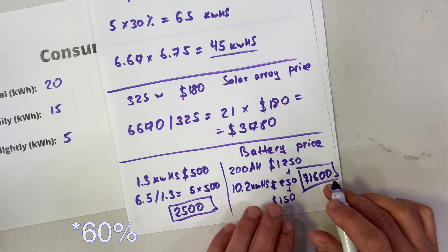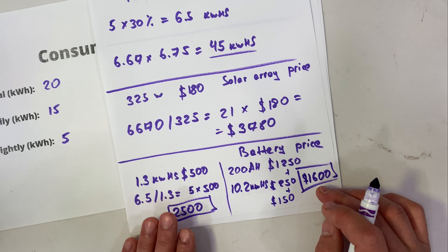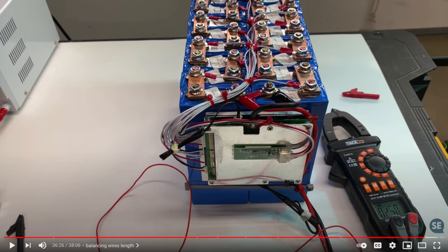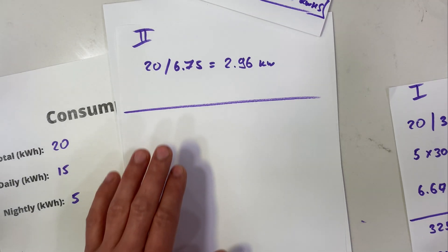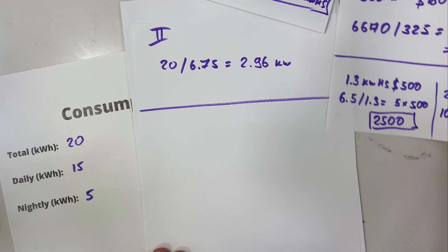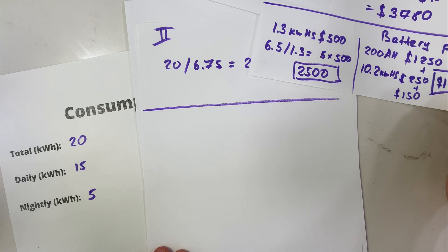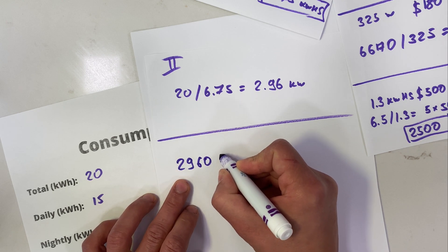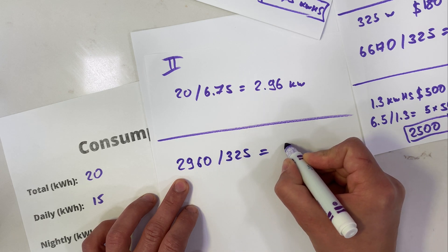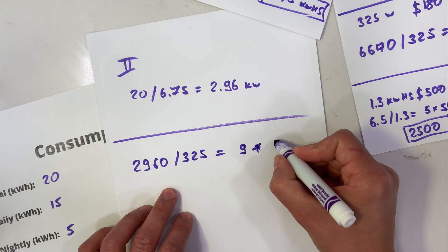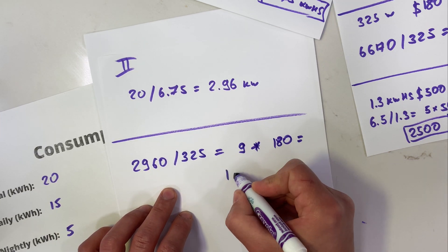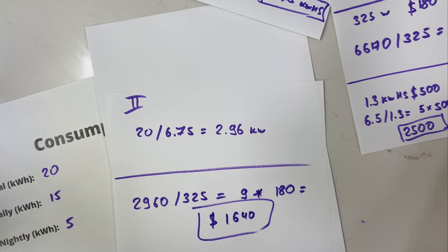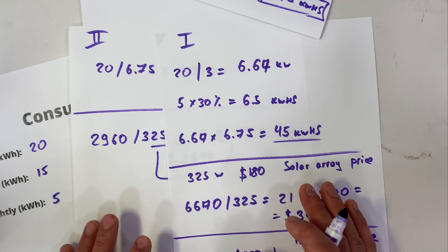For $1,600 you get almost twice the capacity of the ready-made option, and building a lithium iron phosphate battery is not that complicated. For example two, battery pricing is the same ($2,500 or $1,600), but the solar panel cost is less. We need 2960 watts, so 2960 divided by 325 is about 9 panels. Nine panels at $180 equals $1,640.